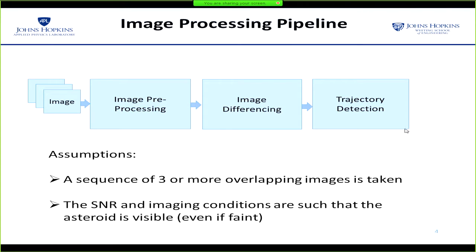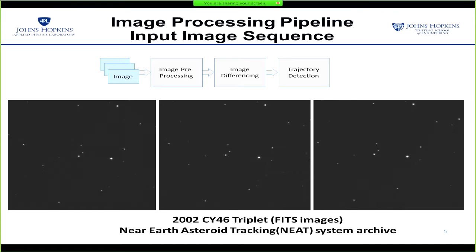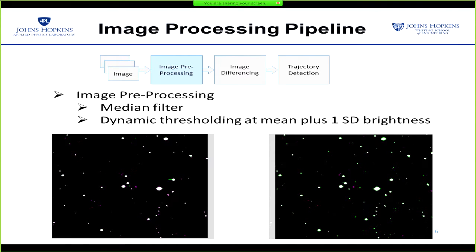Here is our image processing pipeline. We assume that we have a sequence of three or more overlapping images that are taken a few minutes apart, and also the imaging conditions are such that the asteroid is visible in most of these images. Here are three images of asteroid CY-426 from the NEAT archives, and these are taken about 15 to 20 minutes apart. This is our input image sequence to the pipeline.